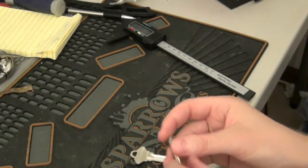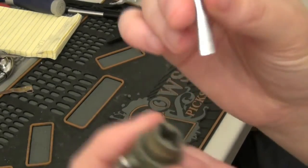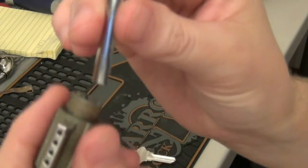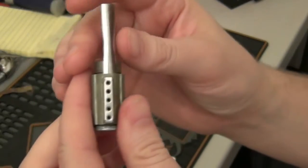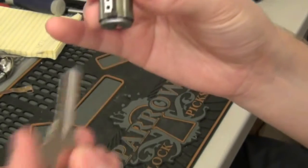The way this works is you just insert it into the back of the lock. You can either use a lock pick or a key blank. I'm going to use a key blank.